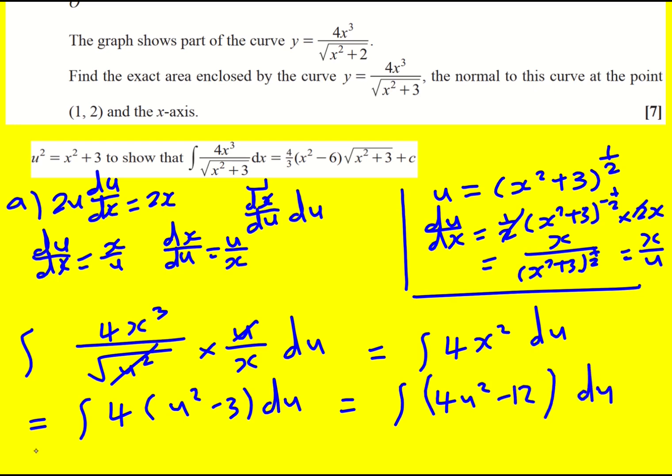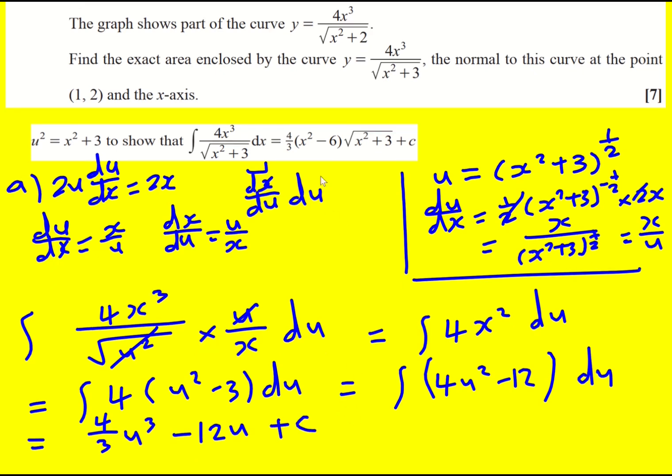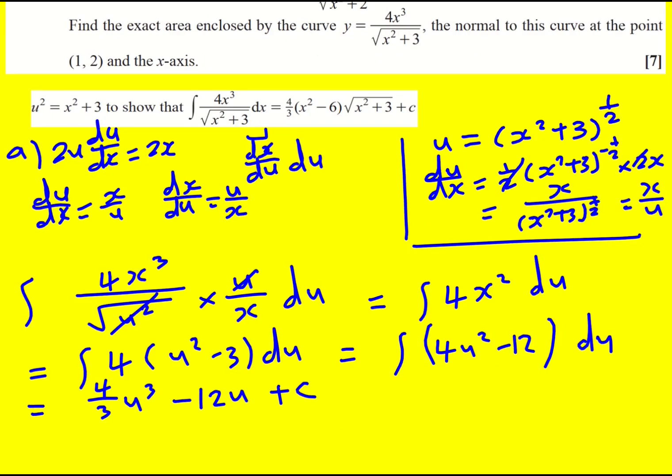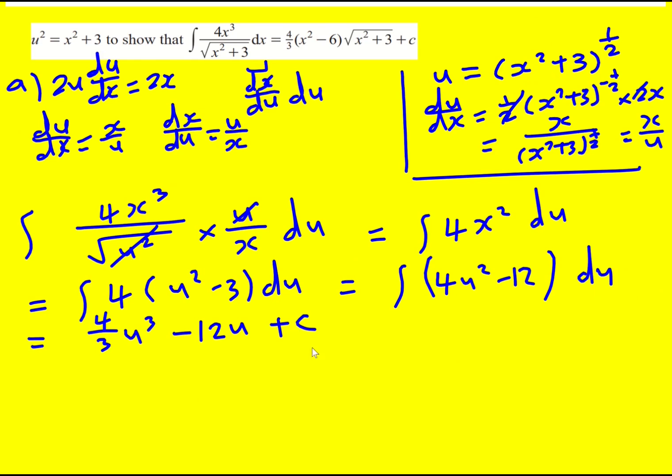4u squared minus 12 du. So that will become 4 over 3u cubed. Because I've raised the power by 1 divided by the new power. Minus 12u plus c. And we're nearly there. It doesn't look like we're nearly there, but with the answer given. But we are.